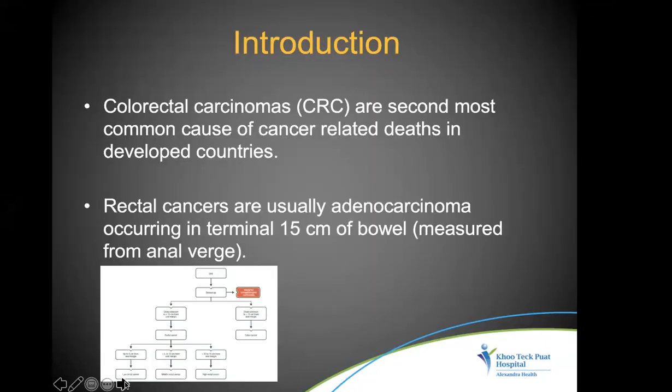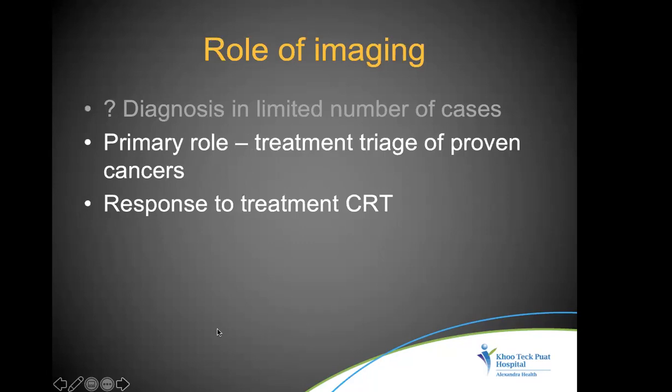Colorectal cancers are quite common and are the second most common cause of cancer-related deaths. Rectal cancers are a subset occurring in the terminal 15 centimeters of bowel — anything more proximal is classified as colon cancer. The tumors behave differently and treatment differs. Rectal cancers are generally adenocarcinomas occurring in the terminal 15 centimeters of bowel.